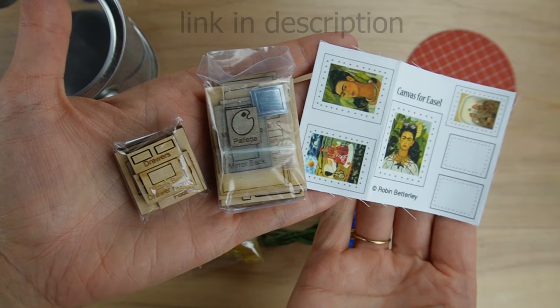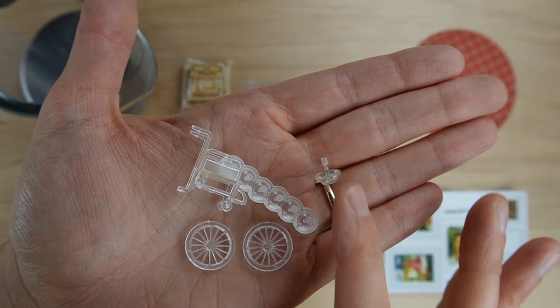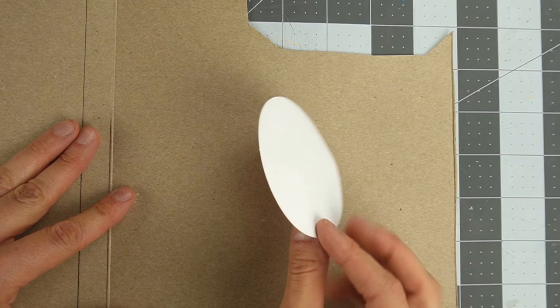This kit comes with everything you need to recreate Frida Kahlo's art studio inside of a paint can. The kit comes with a tile floor printed on cardstock.